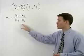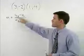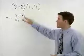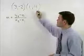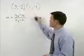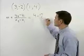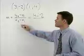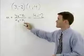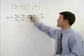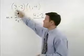Using our slope formula, we take the second y minus the first y, which in this case is 4 minus a negative 2, over our second x minus our first x, which in this case is 1 minus 3.